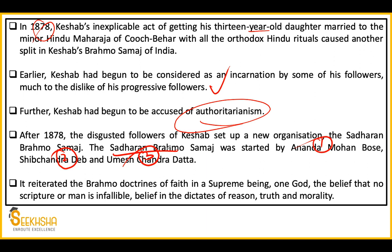Followers like Ananda Mohan Bose, Shib Chandra Dev, and Umesh Chandra Datta came together and started the Sadharan Brahmo Samaj. They returned to the original Brahmo Samaj doctrines: one God as supreme being, the belief that no scripture or man is infallible, truth and morality. So remember three names for Sadharan Brahmo Samaj: Ananda Mohan Bose, Shib Chandra Dev, and Umesh Chandra Datta. Brahmo Samaj bifurcated into Brahmo Samaj of India and Adi Brahmo Samaj, then Brahmo Samaj of India also had a branch split off — Sadharan Brahmo Samaj.